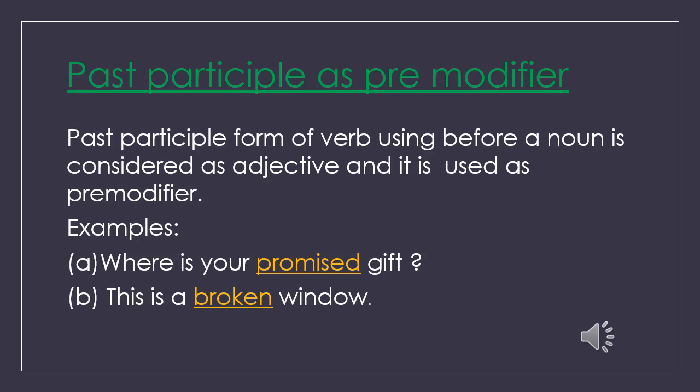Past participle as premodifier. The past participle form of a verb used before a noun is considered as an adjective and it is used as premodifier. Example A: 'Where is your promised gift?' Example B: 'This is a broken window.' Here, the past participles 'promised' and 'broken' are used as premodifiers of 'gift' and 'window.'